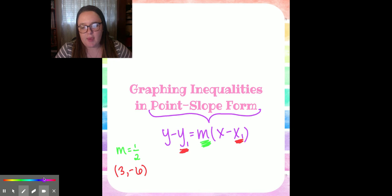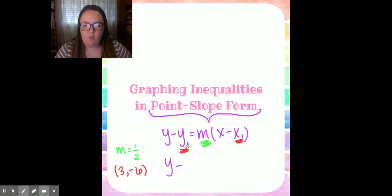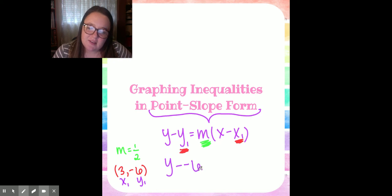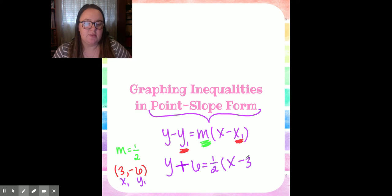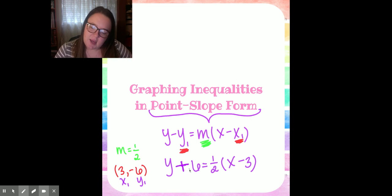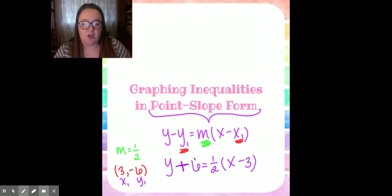If I gave you that your m was one-half and your point was at (3, negative 6), and we put it into the formula: y minus y1 — my y1 is negative 6. So when I write negative 6, what happens to that double negative? It turns to a positive. So now this says y plus 6 equals one-half parentheses x minus 3. When there is a plus sign in point-slope form, that means you put in a negative number.